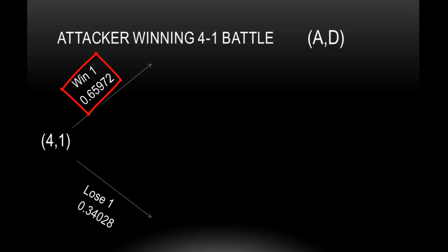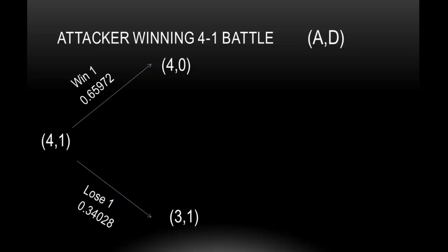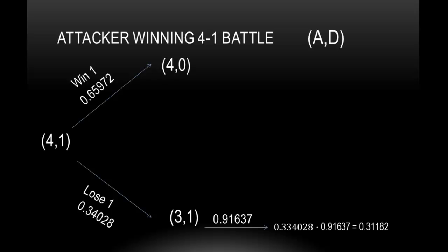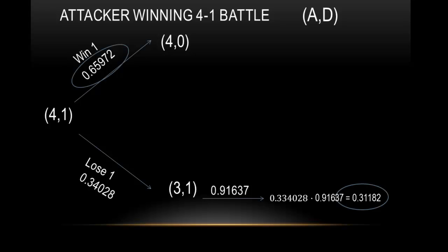Now the 4 on 1 battle — the attacker has 4 dice and the defender has 1. The attacker can win 1 with that probability, or the attacker can lose 1 with the probability of 0.34028. Notice that in the top branch, the attacker has 1 die because the defender has 0 dice. On the bottom, you have a 3 on 1. We already know the probability of winning a 3 on 1 battle, which is 0.91637. Multiply through those branches and you get 0.31182. Add these two probabilities together — they both represent the attacker succeeding — and we get 0.97154.